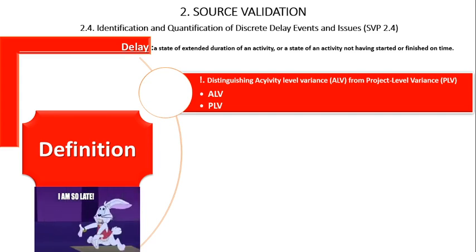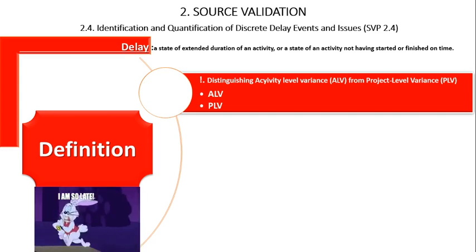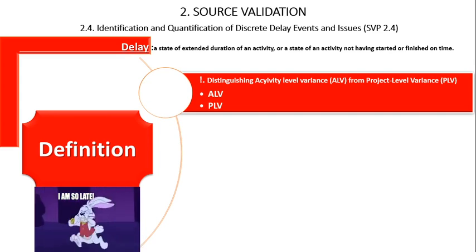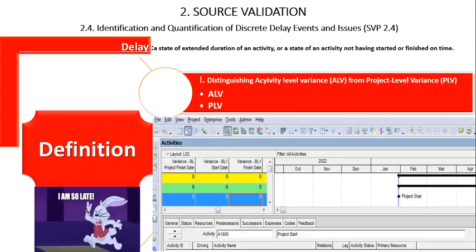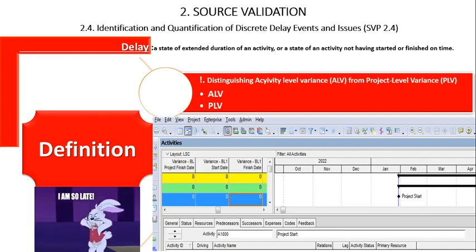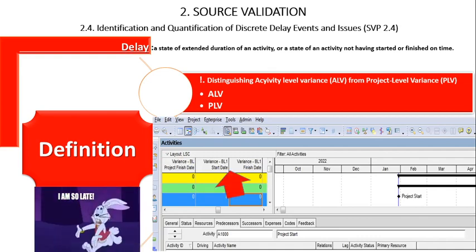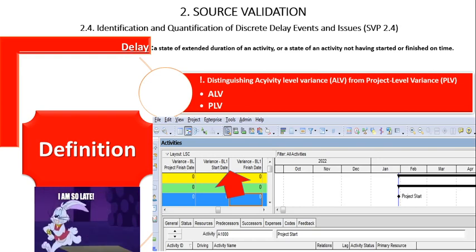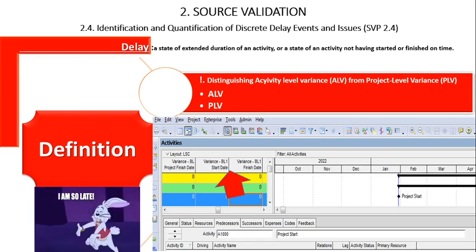The first point is distinguishing activity-level variance from project-level variance. Activity-level variance: forensic delay analysis primarily focuses on determining start or duration variances of a specific schedule activity, otherwise known as activity-level variances. Activity-level variances are the result of several types of delay causes.